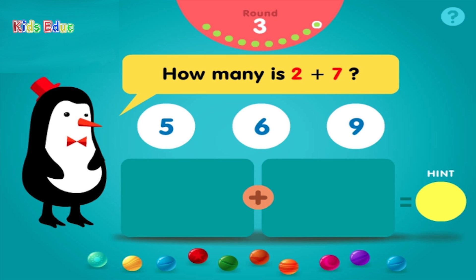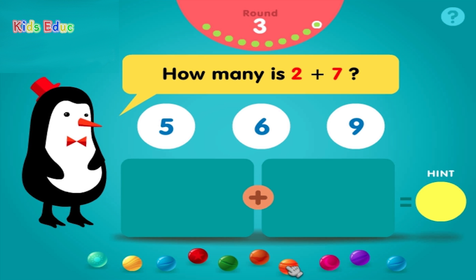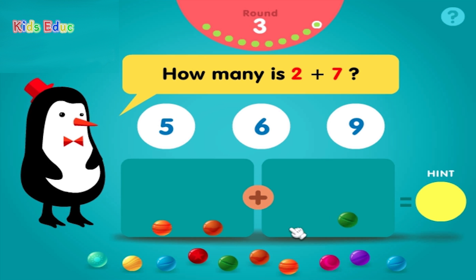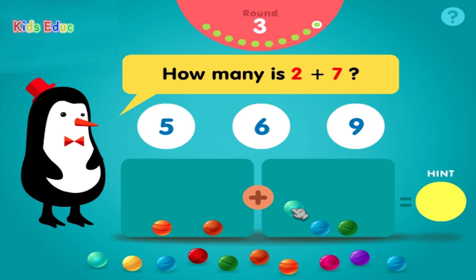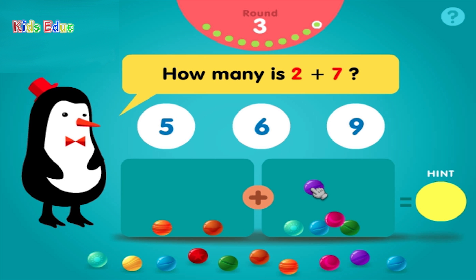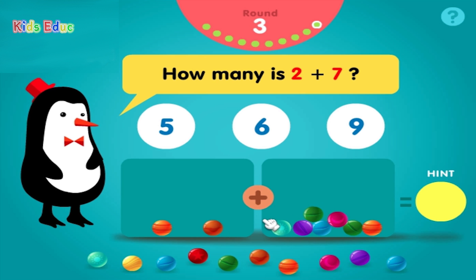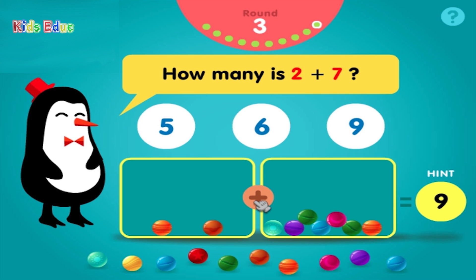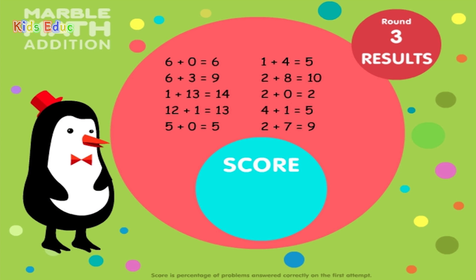How many is two plus seven? One, two, plus one, two, three, four, five, six, seven, equals nine. Radical. Results.